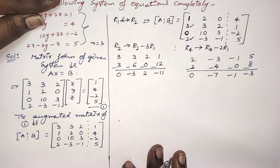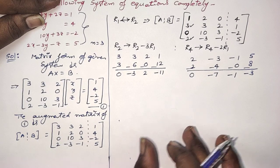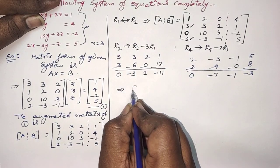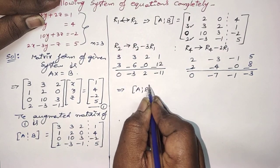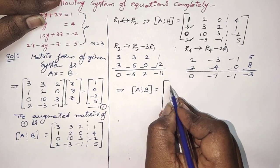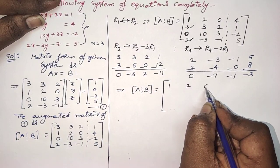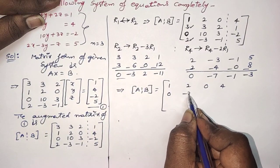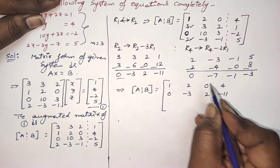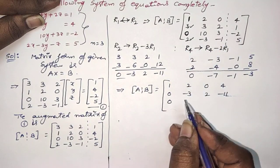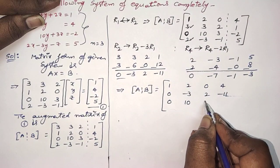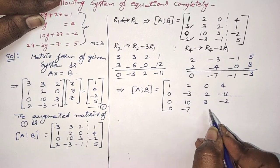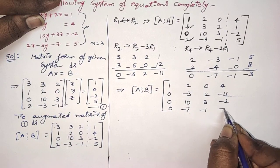To avoid numerical calculation errors, you can write the operations here only, then write the updated matrix. The augmented matrix [A|B] becomes: first row 1, 2, 0, 4; second row 0, minus 3, 2, minus 11; third row 0, 10, 3, minus 2; last row 0, minus 7, minus 1, minus 3.